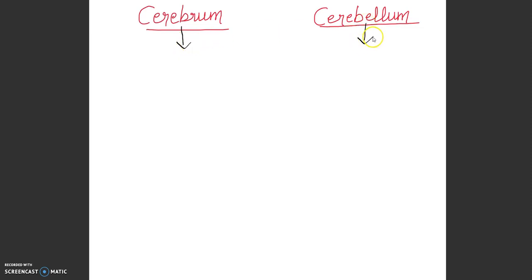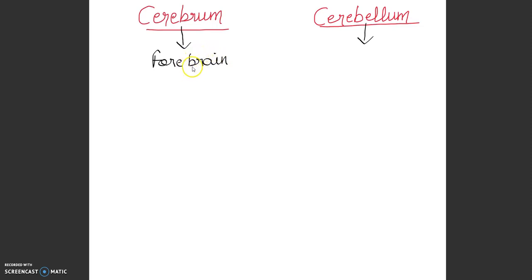First, Cerebrum — it is a part of the forebrain. We have classified the brain into three parts: forebrain, midbrain, and hindbrain. So Cerebrum is a part of the forebrain, and Cerebellum is a part of the hindbrain.